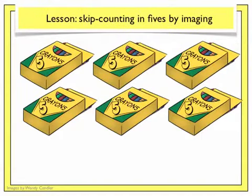Our final skip counting sequence that you need to image is the pattern for 5. This time we have boxes of crayons. Create a picture in your mind about the groups of crayons that will come out of each box as we skip count each group of 5. Here we go.